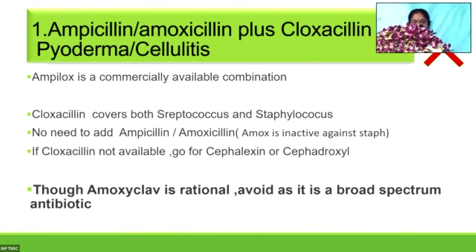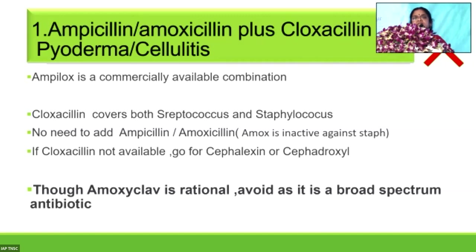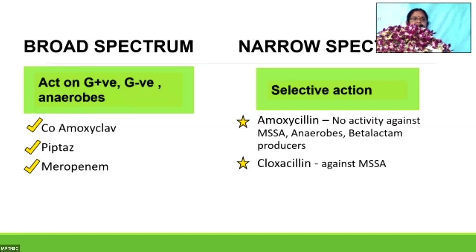Why is Ampilox or Amoxiclox irrational? Cloxacillin covers both streptococcus and staphylococcus, so there is no role for ampicillin or amoxicillin. But cloxacillin is not commercially available easily. In that case, use first-generation cephalosporins — cefalexin or cefadroxil — for skin and soft tissue infections. There is no need to resort to ampicilox. You can give amoxiclav for skin and soft tissue infections — it is a rational and right combination, though it is a broad-spectrum antibiotic.